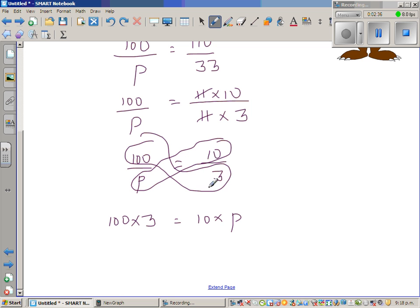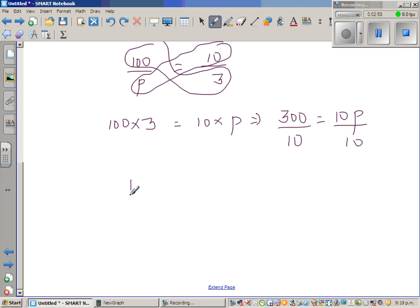I'll explain why you can cross multiply. So this is 300, so 100 times 10P. This implies 300 is equal to 10P. So if you divide this by 10, you have to divide this side by 10. So this implies P is equal to 30 dollars. So his original amount was 30 dollars.